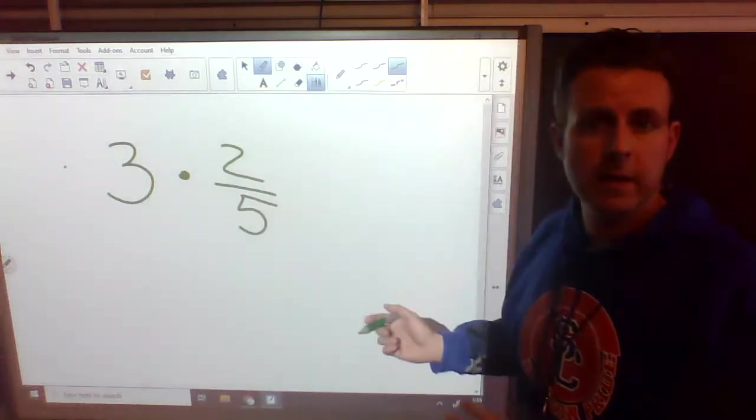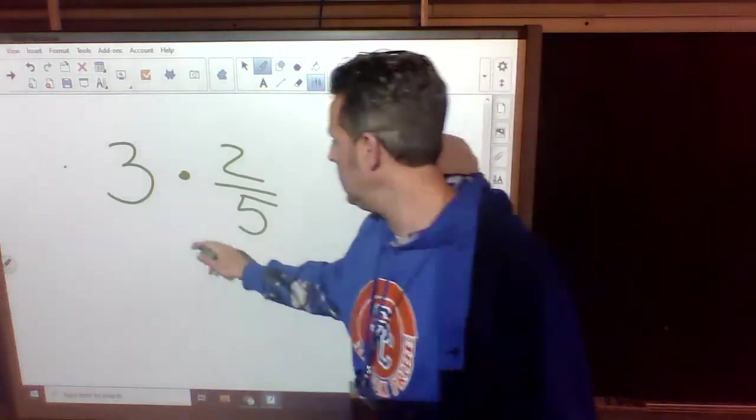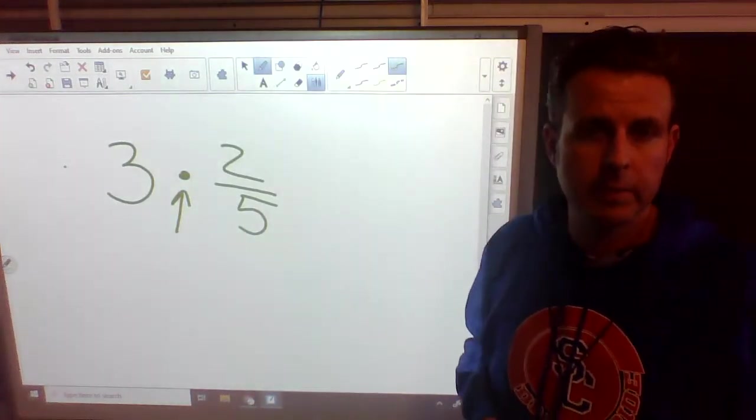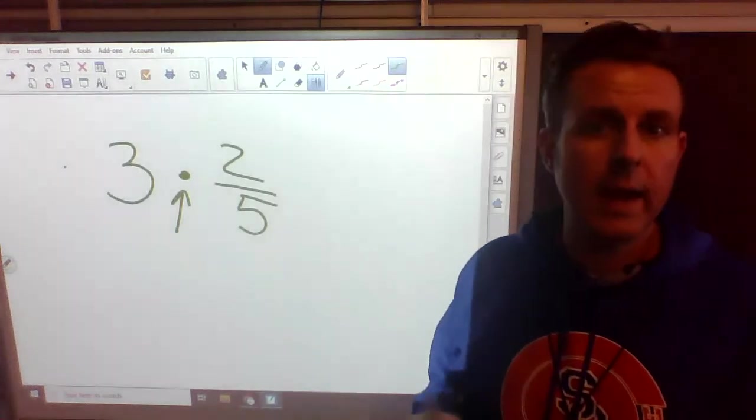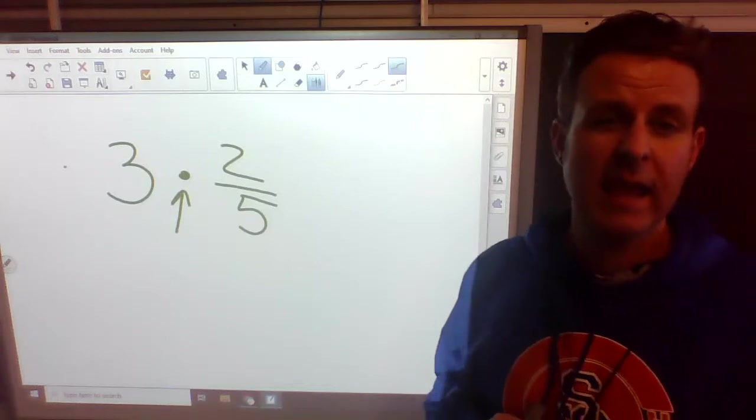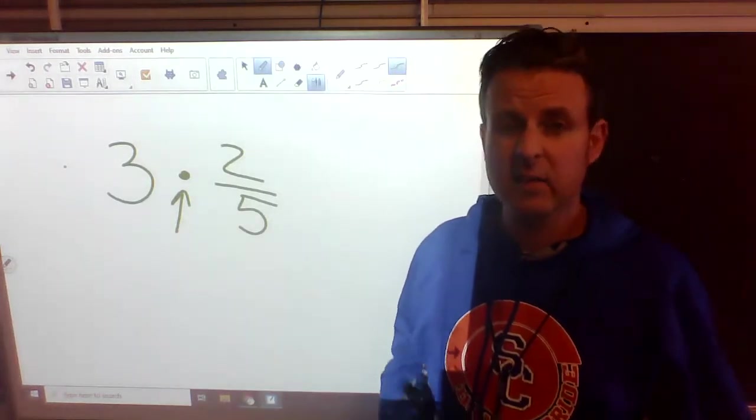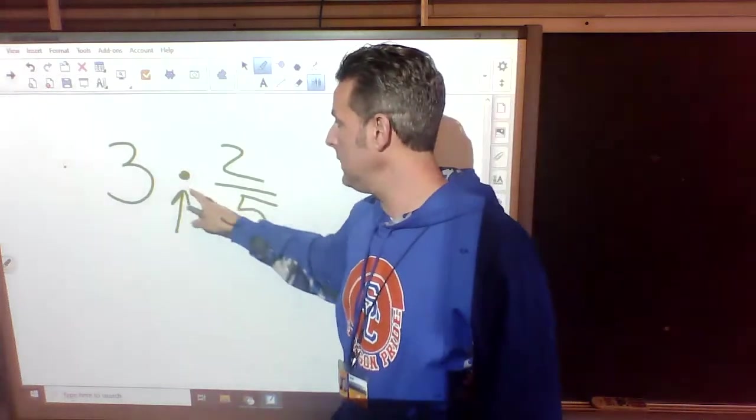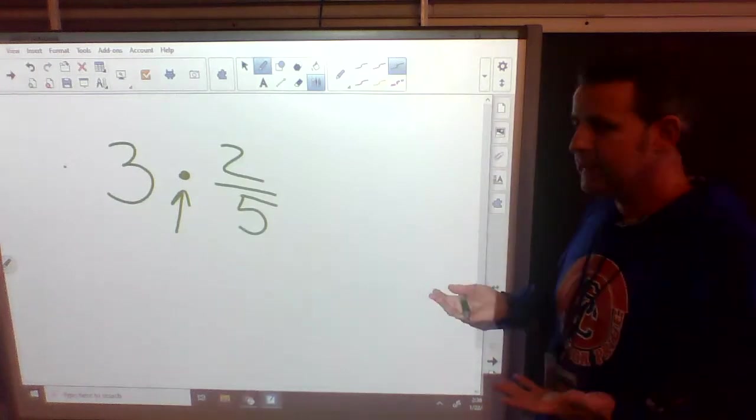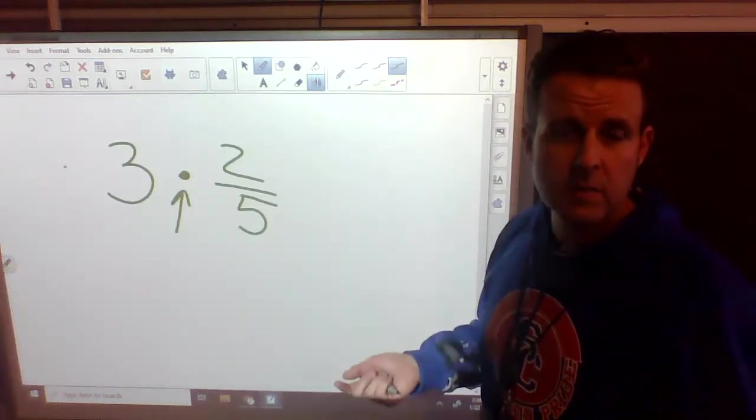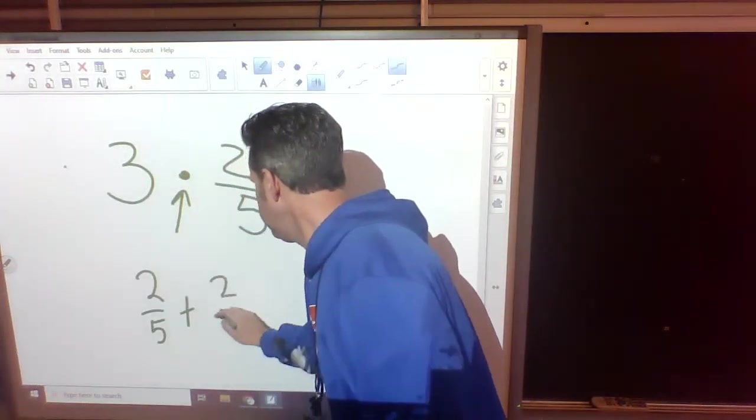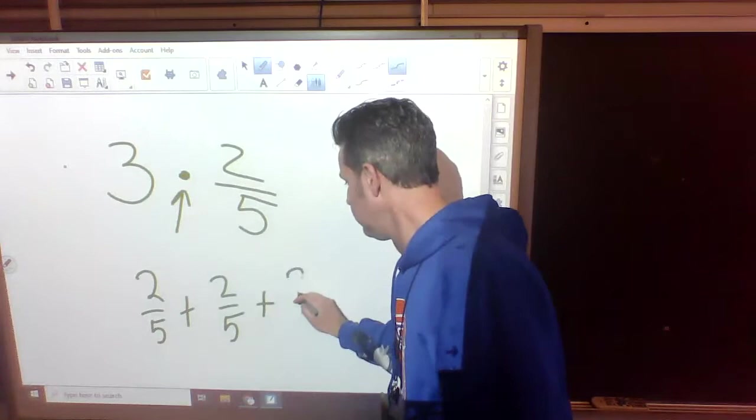We have the whole number 3 times 2 fifths. And again, some of my new people, the little dot in between two numbers does mean to multiply. We're going to try to start moving away from putting the x for multiplication because we are going to be getting in some algebra. And algebra involves letters. x is a letter, so we don't want to get confused. So this dot between two numbers, it's not a decimal. This is actually a multiplication sign. So what does this mean? It means we're going to take 3 times 2 fifths. So really what it means is we take 2 fifths plus 2 fifths plus 2 fifths.